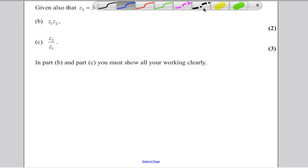Now in the next part, you're given a new complex number, z2 is 3 plus 4i. And you are asked, and this is very important, to find in the form a plus ib, z1 times z2.